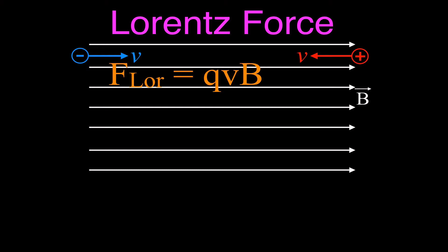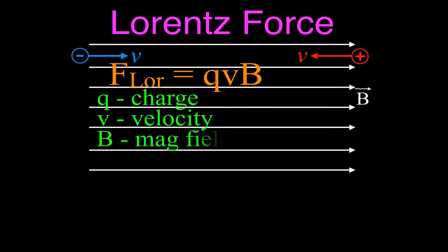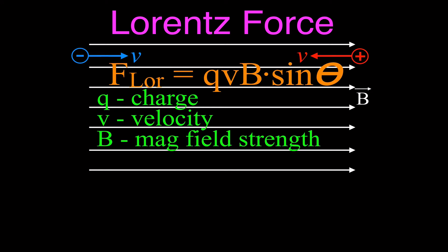We use our Lorentz force equation to figure out the force on these charged particles moving parallel to the magnetic field. In this case, like before, we have some charge Q, and now we also have some velocity — the charged particles are moving with some initial velocity. We also have a magnetic field. But this isn't actually the complete equation, because the complete equation includes times the sine of theta. To calculate the Lorentz force, you need Q, V, B, and the sine of theta. Theta is the angle between the velocity vector and the magnetic field vector.